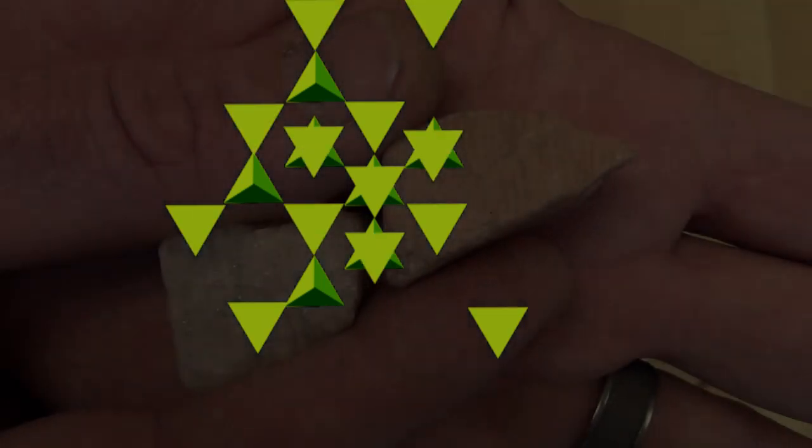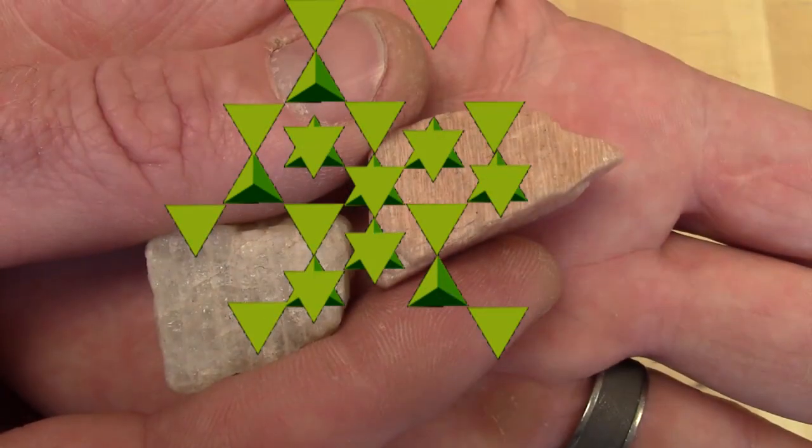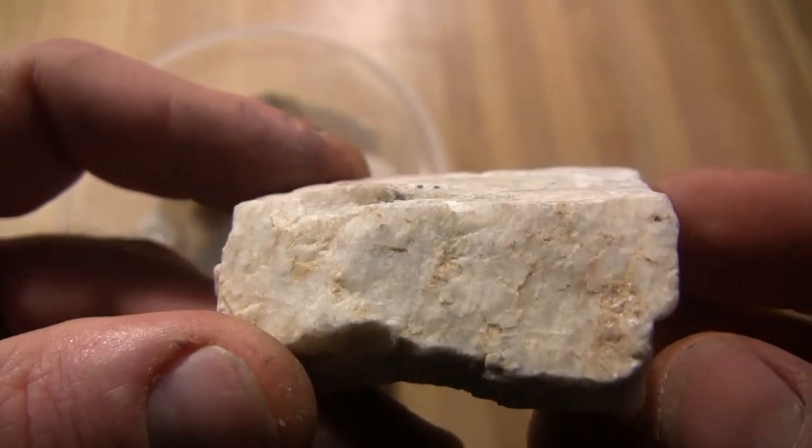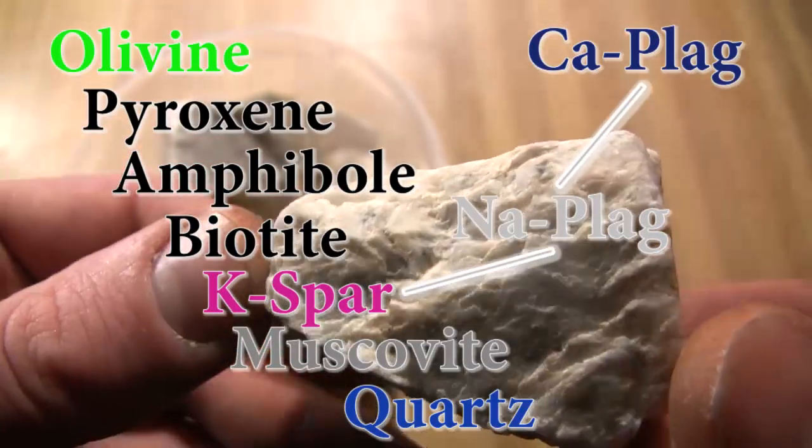The most complex silicates are tectosilicates, which have three-dimensional sharing of the silica tetrahedra corners. These make up the most common minerals in the Earth's crust. We've already seen the most common mineral of the Earth's crust, the plagioclase solid solution, ranging from calcium rich to sodium rich.